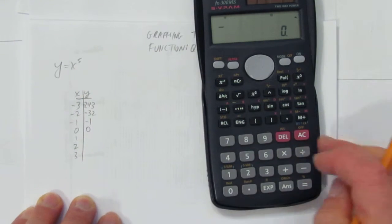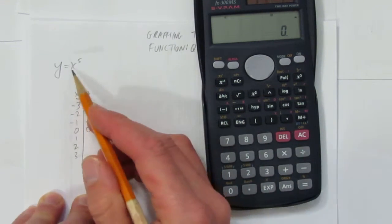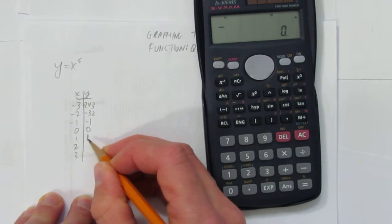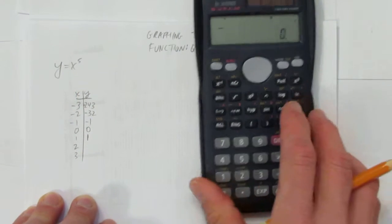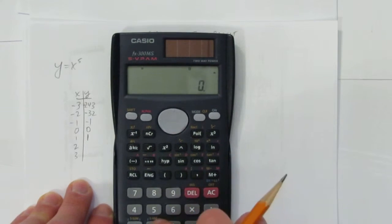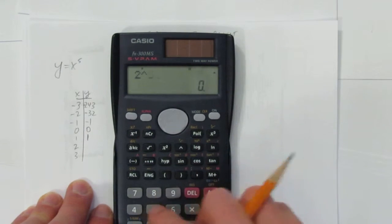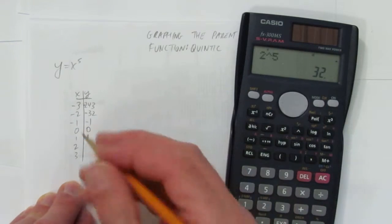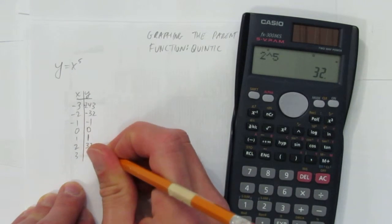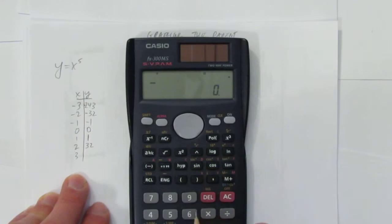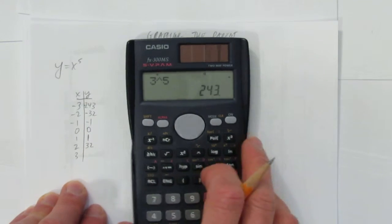1 to the power of 5 is just 1 times 1 times 1 times 1 times 1 — it's just 1. You might start to notice a pattern. 2 to the power of 5 is positive, so the answer will be positive: you get 32. Probably you see the pattern and wouldn't need your calculator. Just in case: 3 to the power of 5 is 243.